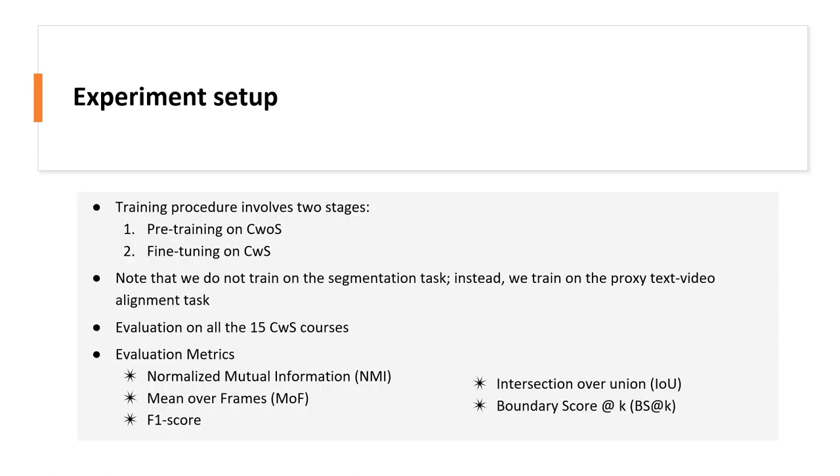Training procedure involves pre-training the embedding model on courses without segmentation and fine-tuning it on courses with segmentation. It is important to note that we do not train on the segmentation task itself. Instead, we train on the proxy text-video alignment task, and so fine-tuning on courses with segmentation is fine.